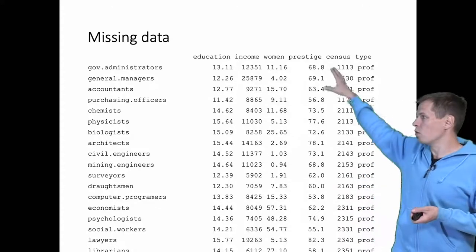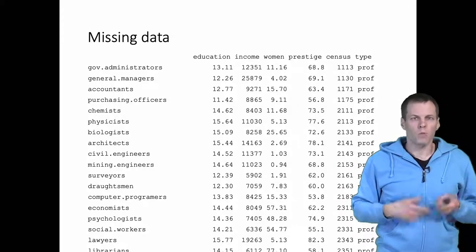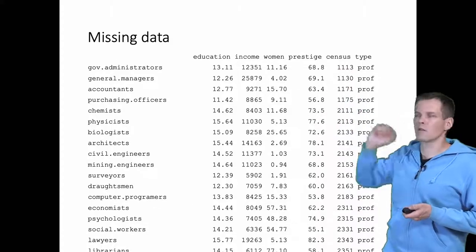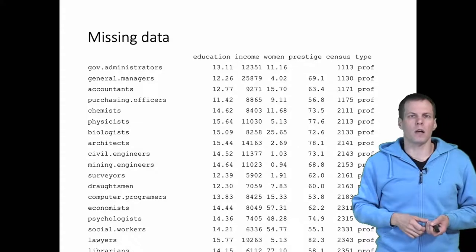The data are complete, so we have every value for every variable for every case. There are no holes here, no missing data, and so this is easy. But what if we don't observe the prestige score for the government administrators? What do we do about it and what's the consequence?